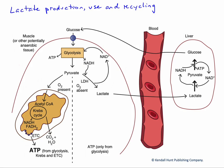In this figure, we'll examine lactate production, use, and recycling. We're going to use this hypothetical cell down here to lay this all out. What we've done is we've divided the cell in half to show you the anaerobic pathways — ATP production from glycolysis — separated from the aerobic pathways over here on the left: ATP from glycolysis, the citric acid cycle, and electron transport chain. We're focusing on glucose as an energy source right now.